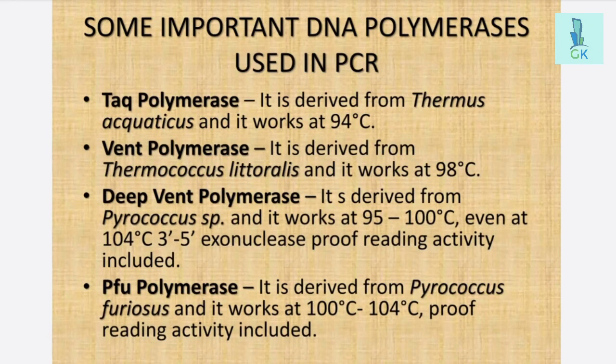Some important DNA polymerases used in PCR are TAC polymerase, VENT polymerase, DIP-VENT polymerase and PFU polymerase. TAC polymerase is derived from Thermus Aquaticus and it works at 94 degree centigrade.